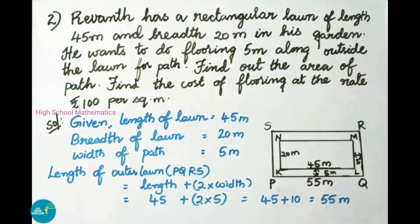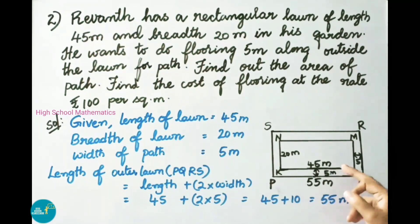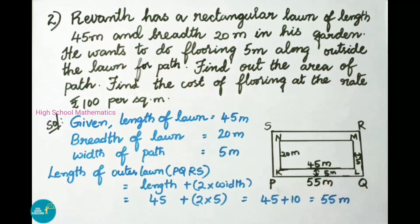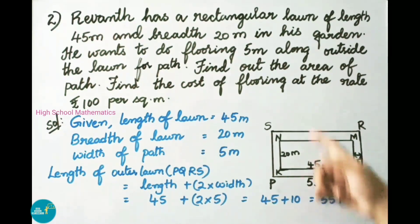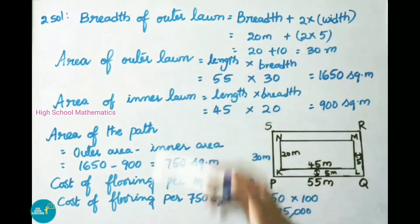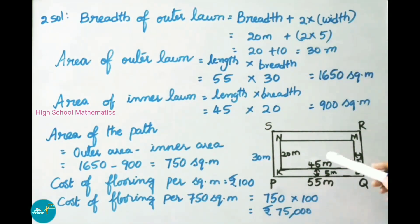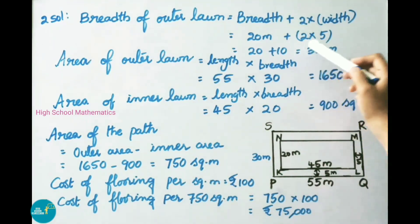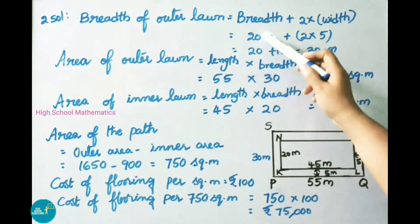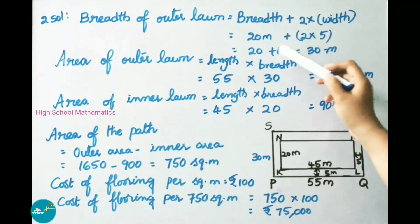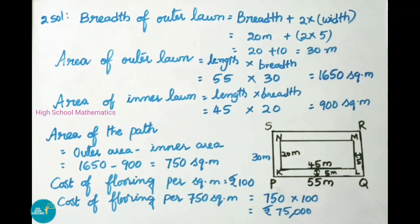Now we find the breadth of the outer lawn, then its area, and the area of the rectangular lawn. Subtracting both areas gives the area of the path, then we find the cost of flooring. Breadth of outer lawn equals breadth 20 meters plus 2 into width 5 meters, which equals 20 plus 10, giving 30 meters. Therefore the breadth of outer lawn is 30 meters.